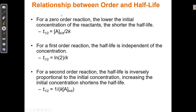For a zero-order reaction, the lower the initial concentration of the reactants, the shorter the half-life. For a first-order reaction, the half-life is the same regardless of the concentration. For a second-order reaction, the half-life is inversely proportional to the initial concentration — if I increase the initial concentration, the half-life actually gets shorter, meaning the half-life speeds up if I have more stuff.